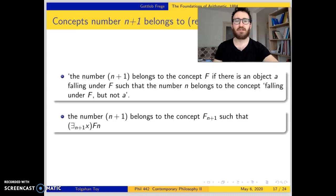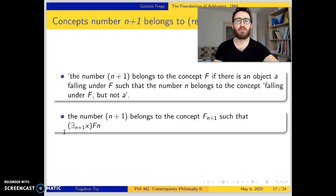At the end of the last lecture, we have seen that for Frege, numbers are about concepts. For example, number n+1 belongs to a concept under which exactly n+1 objects fall, or number 2 belongs to a concept under which exactly 2 objects fall.